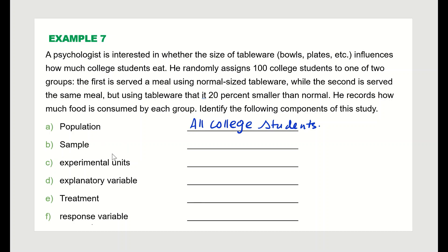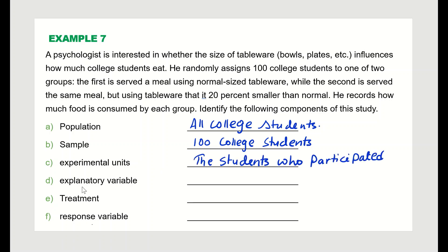The sample is the 100 college students randomly assigned to the two groups. The experimental units are the students who participated in the study. The explanatory variable — the variable being manipulated — is the size of the tableware.